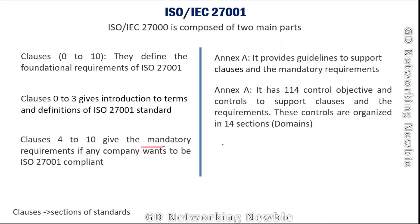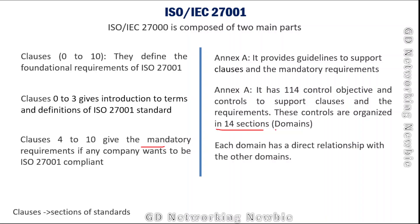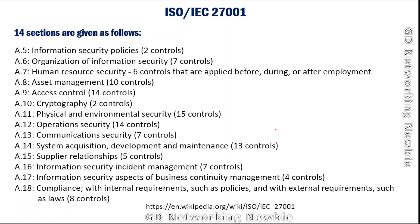Annex A contains 114 control objectives, and these controls are organized into 14 sections, which are sometimes also called domains. Each domain has a direct relationship with the other domains, and together these controls support the clauses and mandatory requirements of the standard.